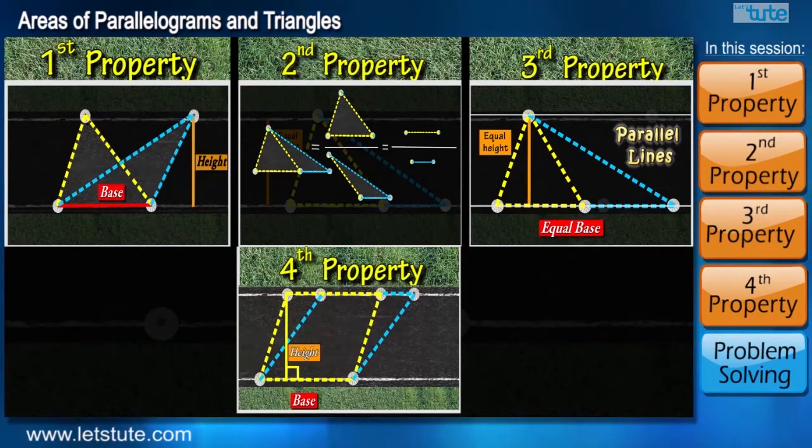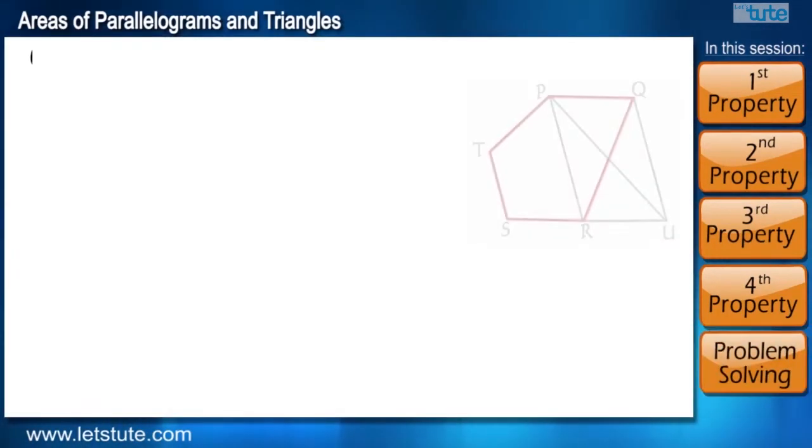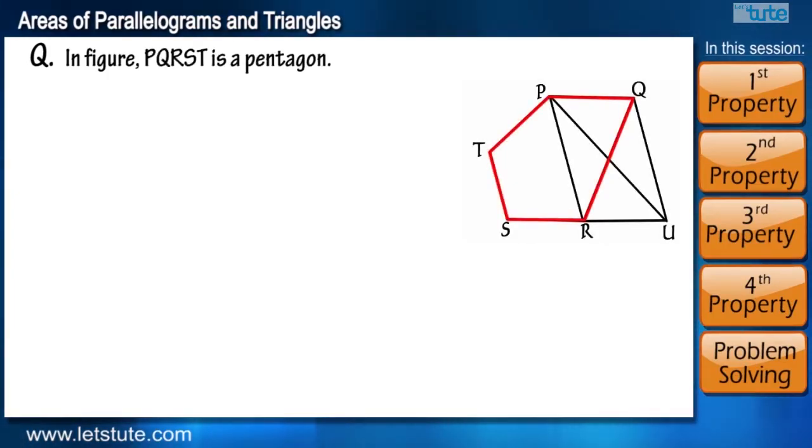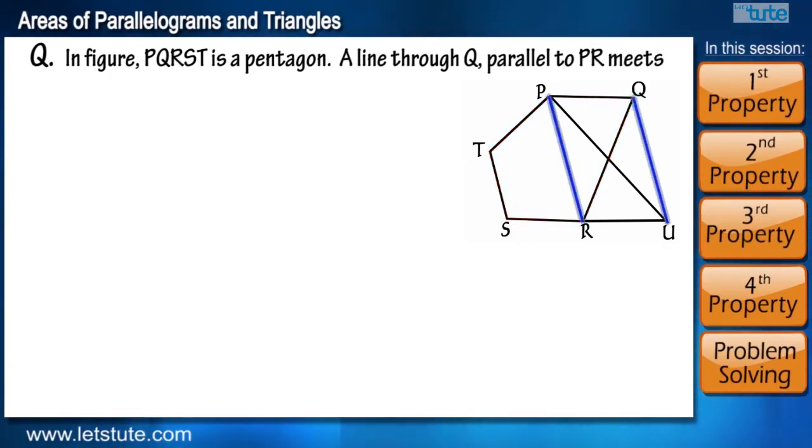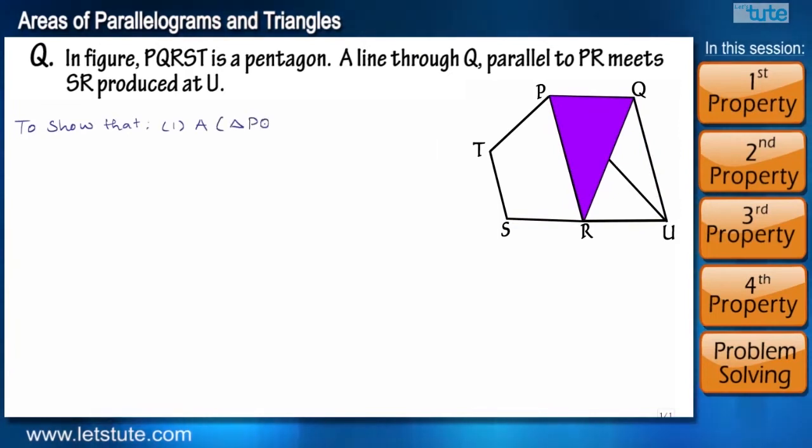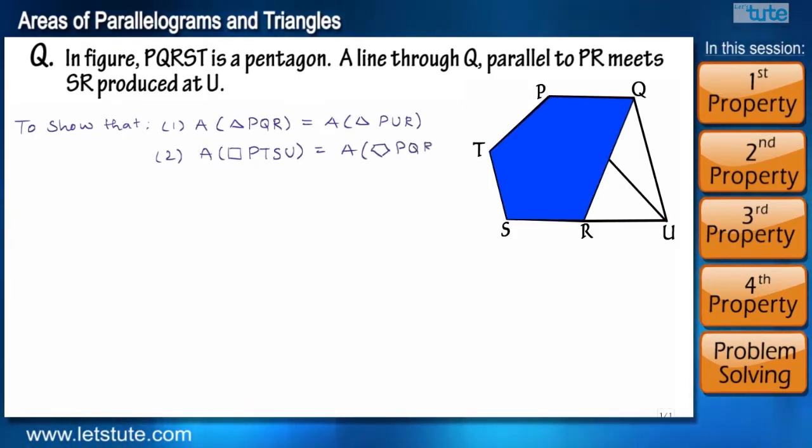But where are we going to use these properties? Let's have a look at one problem which we will solve using these properties. In the given figure PQRST is a pentagon. A line through Q parallel to PR meets SR produced at U. We have to show that area of triangle PQR is equal to area of triangle PUR. And area of quadrilateral PTSU is equal to area of pentagon PQRST.